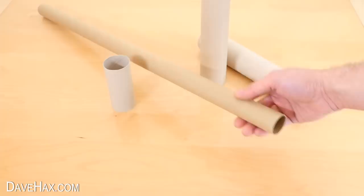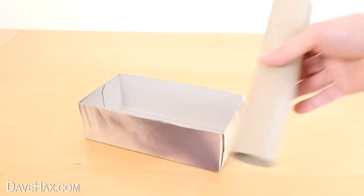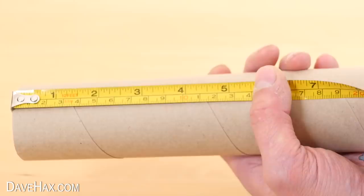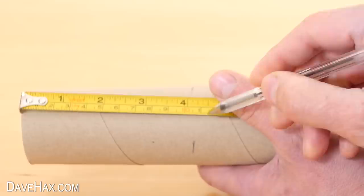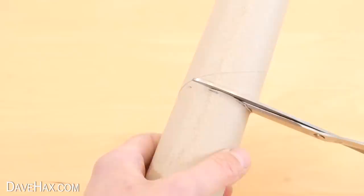Stand it up alongside the tissue box and you can see it's going to be tall enough to make two turrets. So I measured it and drew markers down the center. Then used some scissors to cut it in half.